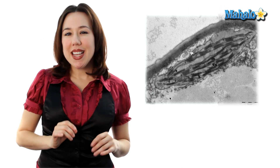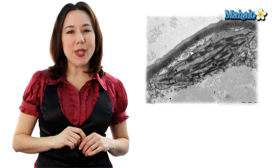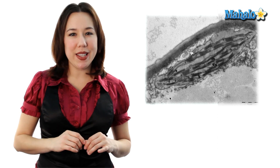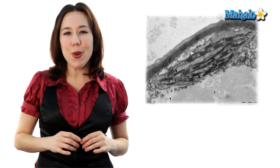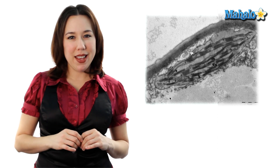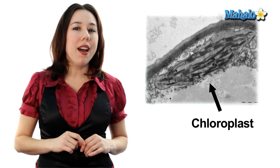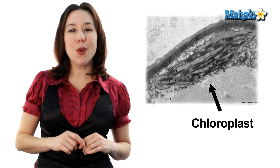Second, since plants are photosynthetic they have to have a special organelle to make that photosynthesis happen. That special organelle is called chloroplasts.